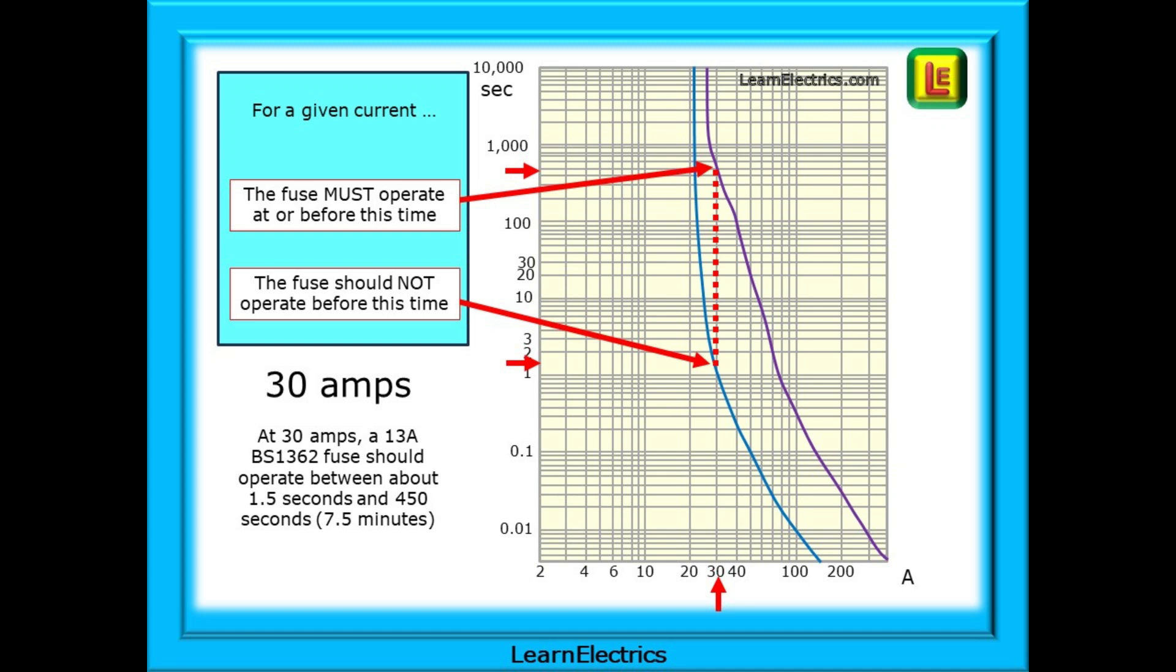And this is how we use the fusing curves to give us the times between which the fuses will operate or blow, and all fuse manufacturers must work to the same standard. Bigger amps, less time to blow. Smaller amps, and more time allowed.